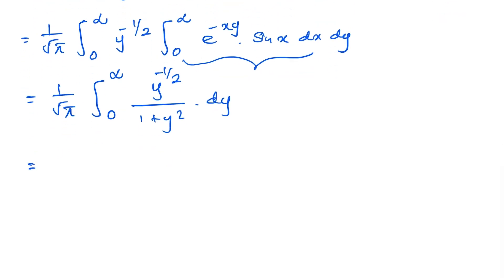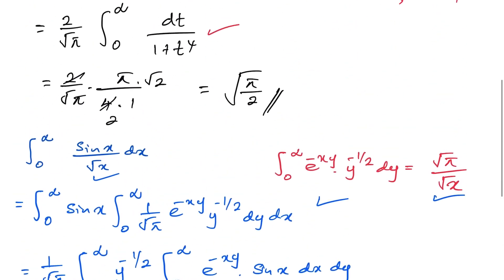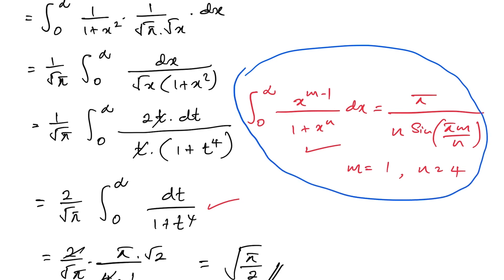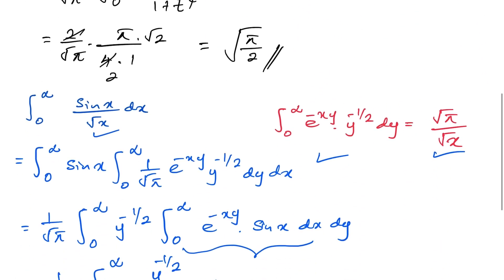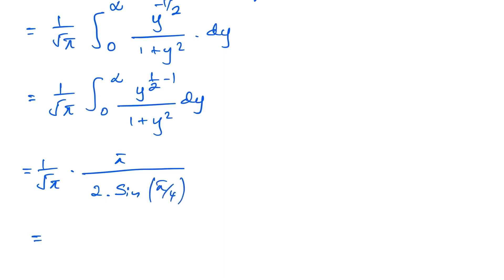So we have 1 over square root of π times the integral from 0 to infinity of y^(−1/2) over (1 + y²) dy. Using the same standard formula with m = 1/2 and n = 2, this equals 1 over square root of π times π over (2 · sin(π/4)), which simplifies again to square root of π over 2. That is the second method.